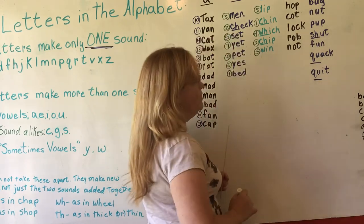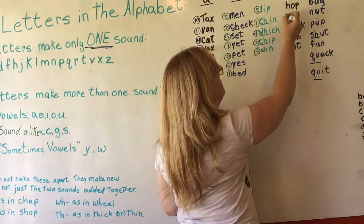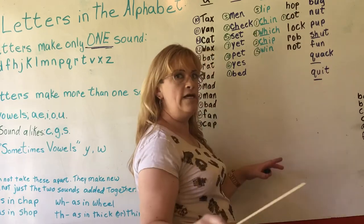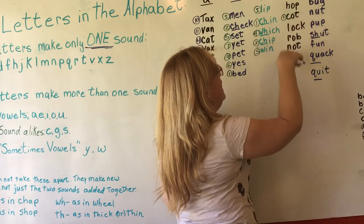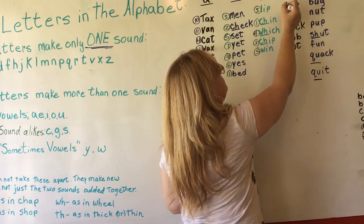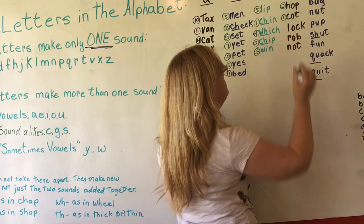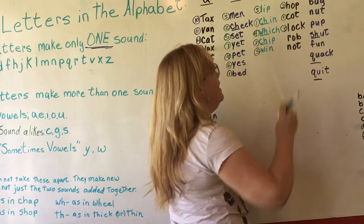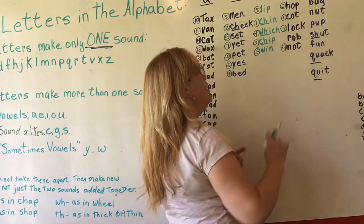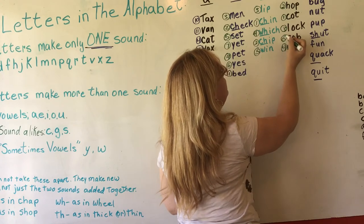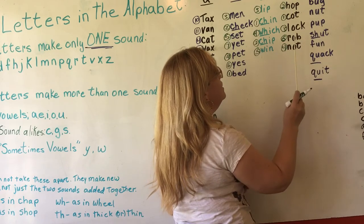Let's put them in alphabetical order. A, B, C — cot is first. Cot is like a mat you sleep on. D, E, F, G, H — hop is next. I, J, K, L — lock. M, N — not. O, P, Q, R — rob. The order is: cot, hop, lock, not, and rob. These are easy because there weren't any double first letters.